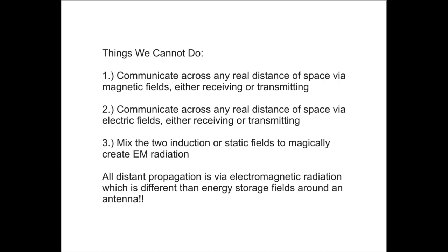We can't mix those other two local induction fields and magically create electromagnetic radiation. The electromagnetic radiation comes from charge acceleration in the conductors of our antenna, and it's a function of the current distributed over a linear length of space. For a long antenna, we consider all the individual sections of current distributed across space, and how those sections either add together in phase or subtract out of phase to form the overall pattern. Basically, it's the current across the given inline straight-line distance of space that causes the radiation, and we can't cheat that.